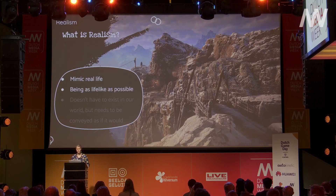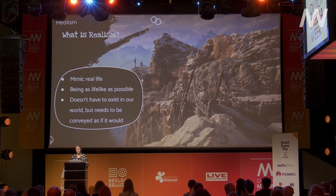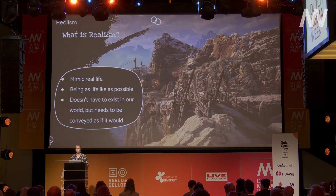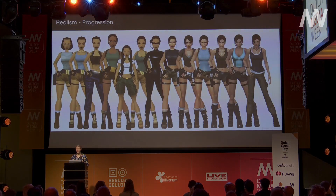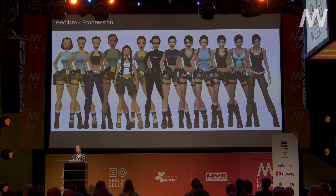Now we're diving into realism — what you actually came here for. What is realism, and how do we perceive something to be realistic? Realism is trying to mimic life and life-like objects. It doesn't necessarily mean it has to exist in real life, but it needs to look like it would fit into our world. Star Wars doesn't really exist in our world, but it's made to look like it actually could. Realism has always been something we strived for — what felt super realistic when it first came out, today we say is outdated and not very realistic. We might even say it looks stylized by today's standards, and this will continue to change.